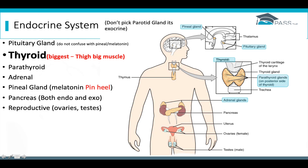With the pituitary gland, make sure that you don't confuse that for the pineal gland. With the thyroid, a common question that you'll see is that it is the biggest endocrine gland — they'll ask which of the following are the largest endocrine glands, and it's going to be the thyroid. The way we remember that is we think of the thigh muscle, which is a big muscle, to help us remember that the thyroid gland is a big gland.